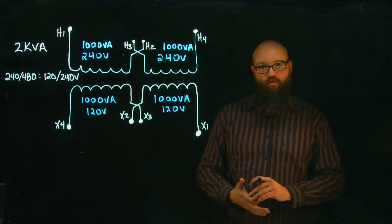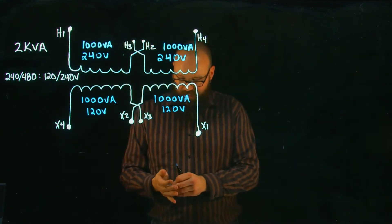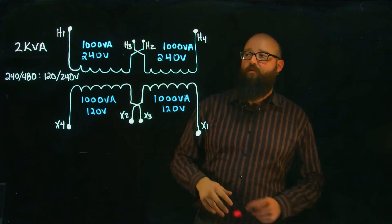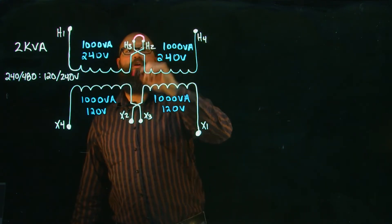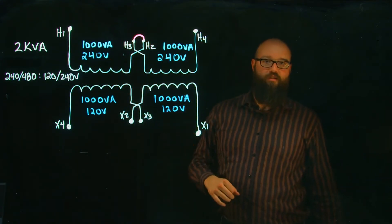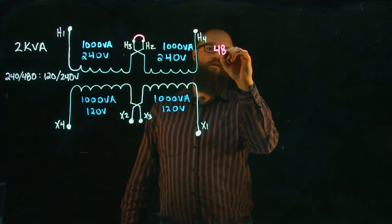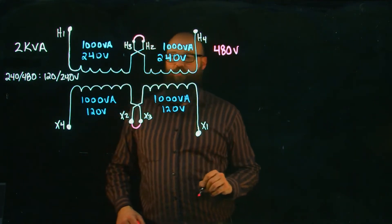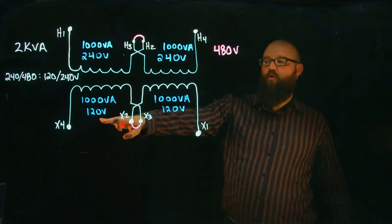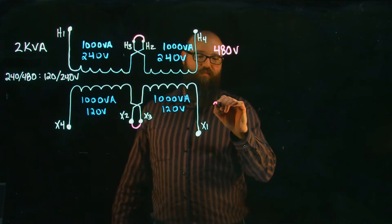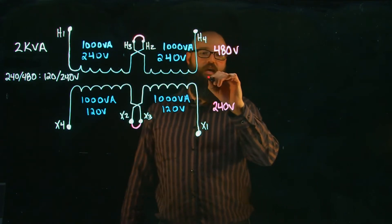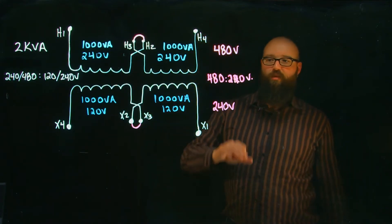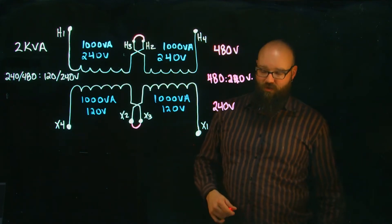It's all in the connection how we achieve the secondary voltage. If I take my primary side with 240 volts and 240 volts and connect them in series with one little jumper, I end up with 240 plus 240, giving a primary voltage of 480 volts. Doing the same on the secondary — one little jumper — gives 120 plus 120, equaling 240 volts. So that's a 480 step-down to 240 volt configuration.